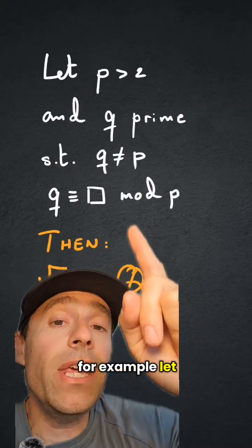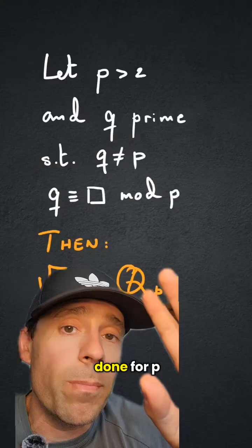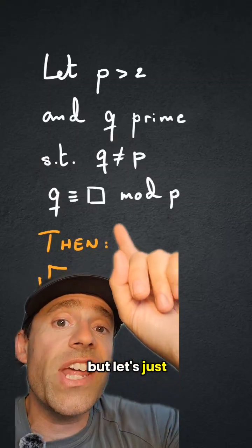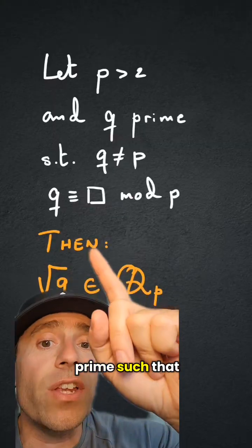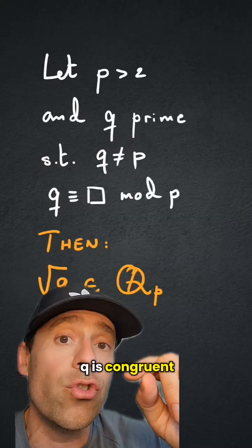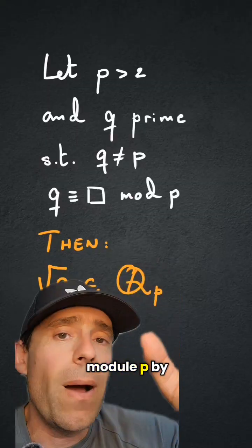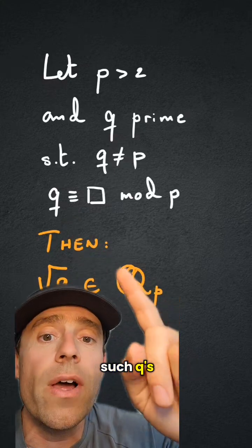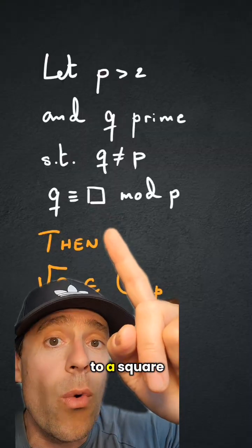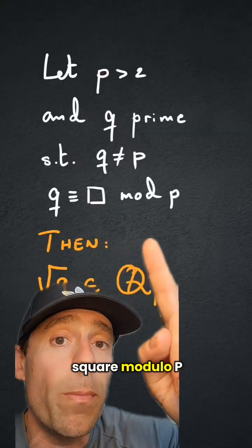For example, let p be an odd prime. This can be done for p equals 2, but let's just say p is an odd prime, and q is any other prime such that q is congruent to a square modulo p. By Dirichlet's theorem, there are infinitely many such q's, so I can pick a q that is congruent to a square, another prime that's congruent to a square modulo p.